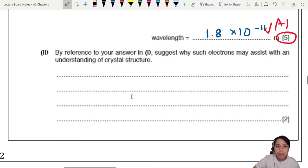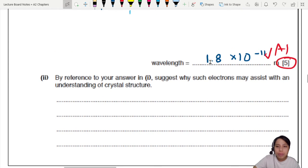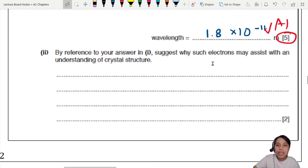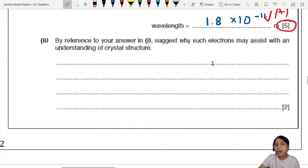Next, the final part. By reference to your answer, this one, state why or suggest why electrons may assist with an understanding of crystal structure. How? So if you remember in the theory video, Miss Li mentioned about how you can use this thing called the electron microscope to study very small things. You can use electrons to study crystals. How do we do that? And how does it even help? What does that have to do with my answer in one, which is a wavelength?